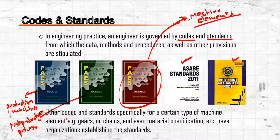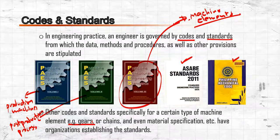There are also other codes and standards specific to certain types of machines — for example, there are organizations that specifically set standards for gear manufacturing, gear materials, chains, and other machine components.